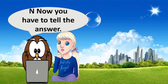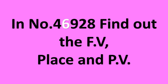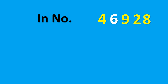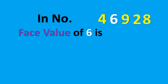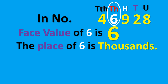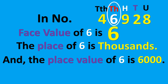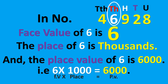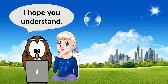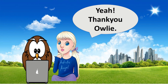Let's try another example. In the number 46928, find the face value, place, and place value of six. The face value of six is six. The place of six is thousands. The place value of six is six thousand — that is, six (the face value) multiplied by one thousand (the place) equals six thousand. Very good — I hope you understand! Thank you!